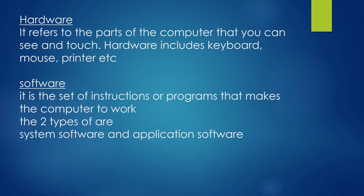What is software? Software is the set of instructions or programs that makes the computer work. If you need to add two numbers, you need to give some instructions — you need to write programs — then only the computer will do the addition. Those programs or instructions are called software. The two types of software are system software and application software.